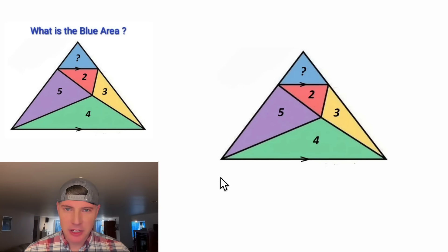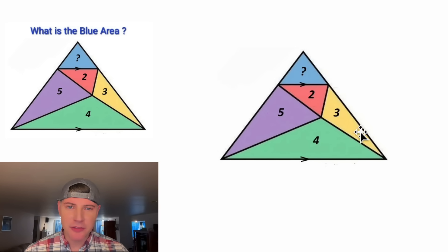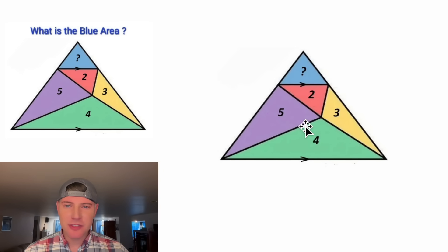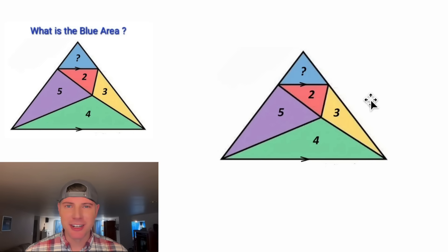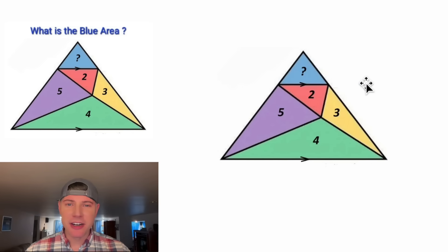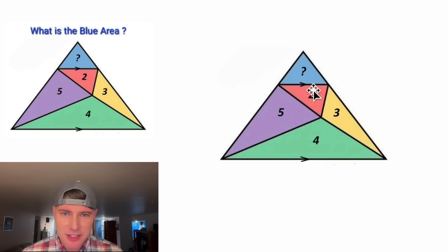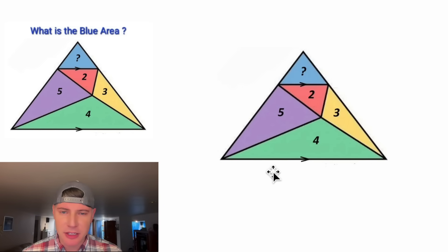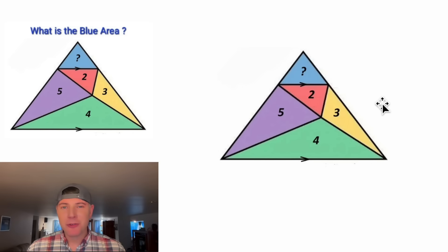Hey guys, this looks like a fun one. We're given a triangle that's made up of five triangles inside of it. We know the areas of these four triangles are two, three, four, and five, but we don't know the area of the blue triangle on top — and it's asking what is the area of that blue triangle. We're also given that the base of this blue triangle is parallel to the base of the larger triangle.